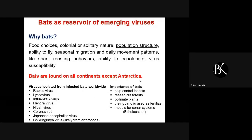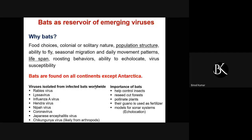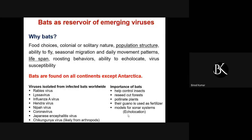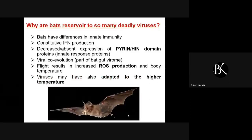Bats are not just bad animals on earth — they have important roles. They help in controlling insects, they reseed cut forests, they pollinate plants, their guano is used as a fertilizer, and most importantly they have the property of echolocation, which has served as a model for our sonar systems. They have really helped human beings a lot.